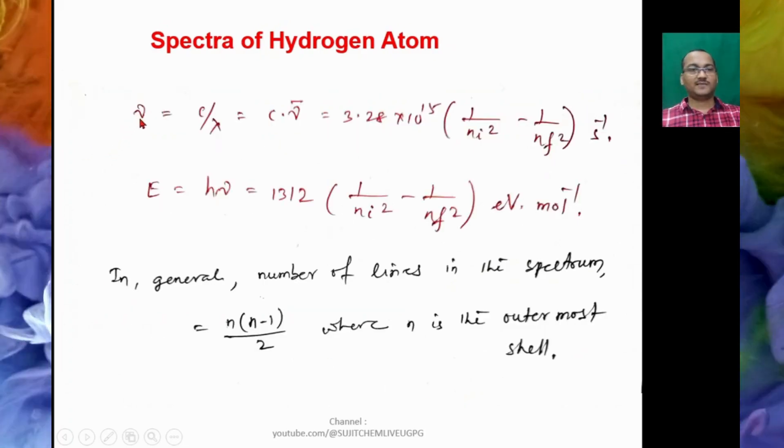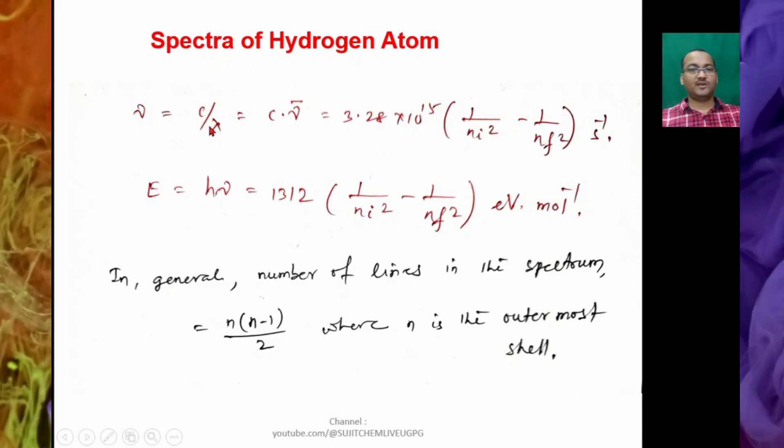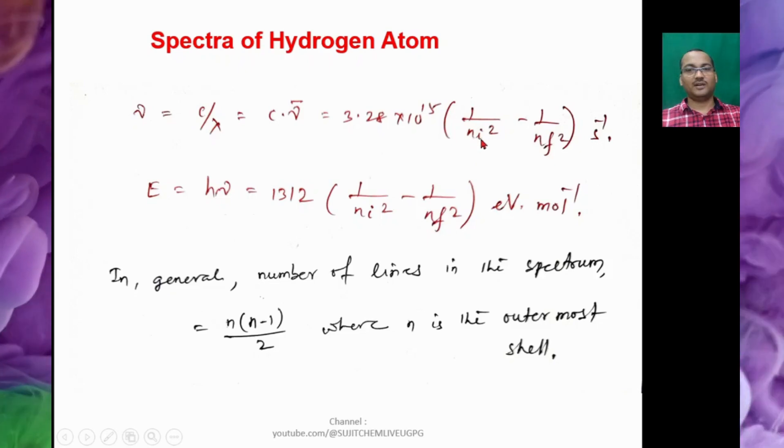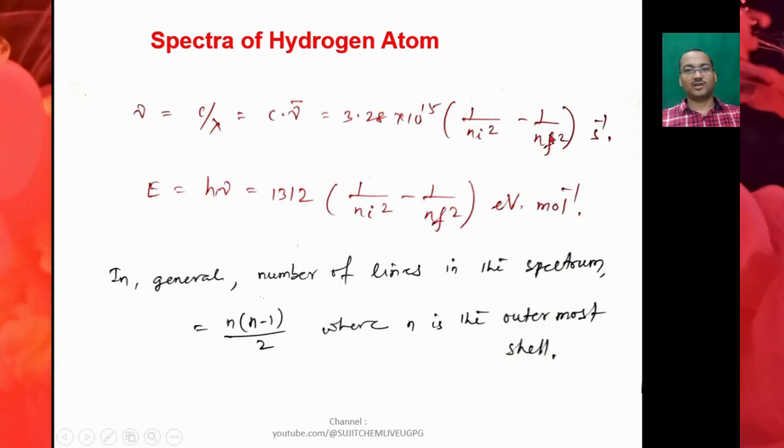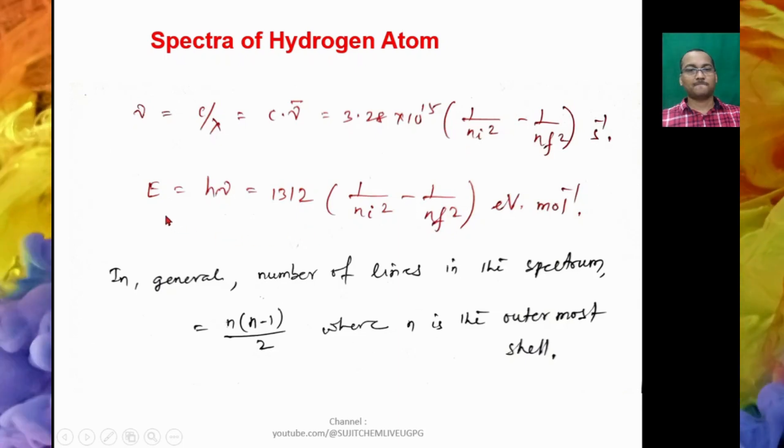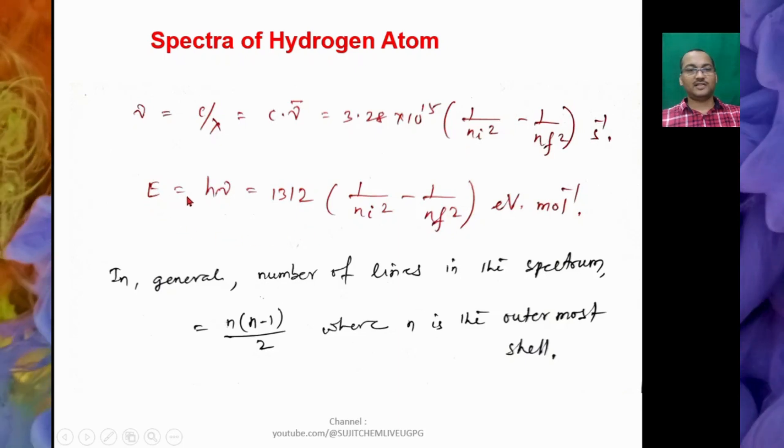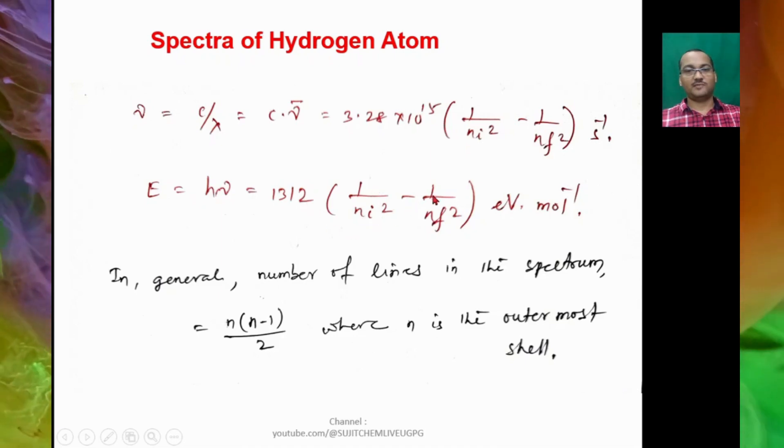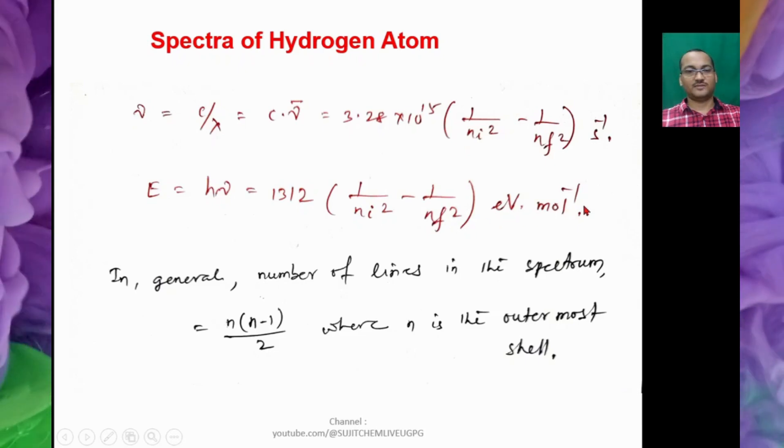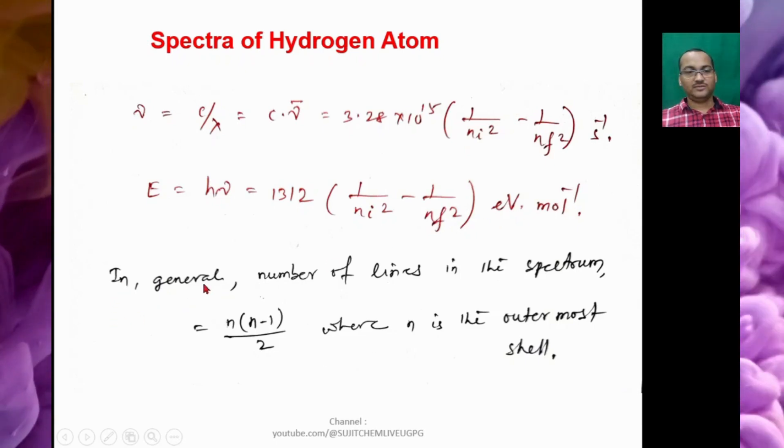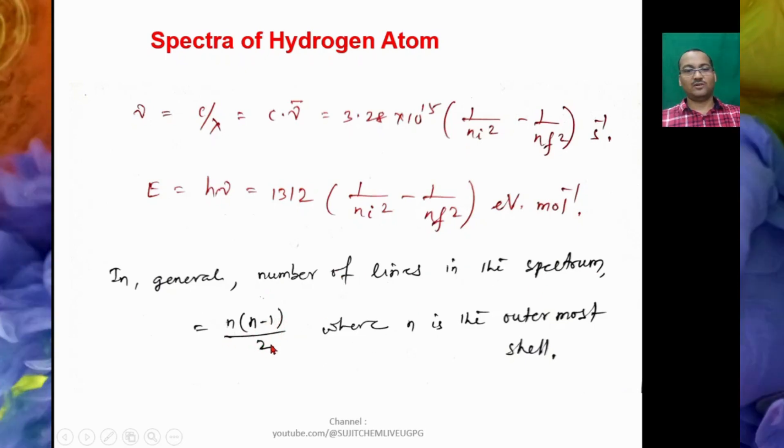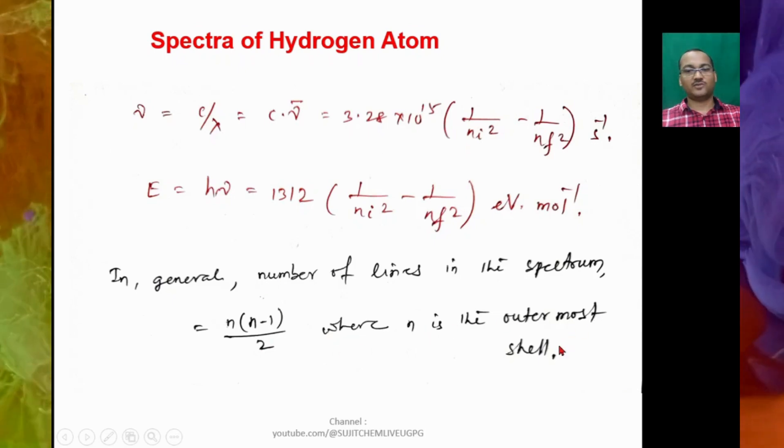So the mathematical expression: ν = c/λ = c × ν̄, that is found to be 3.28 × 10¹⁵ × (1/Nᵢ² - 1/Nf²) per second. So in general, the number of lines in the spectrum is found to be N(N-1)/2, where N is the outermost shell.